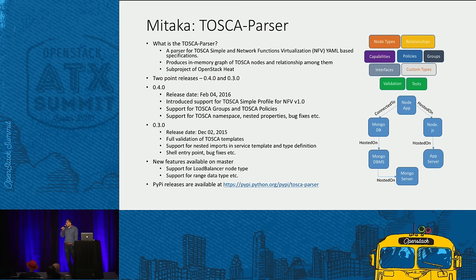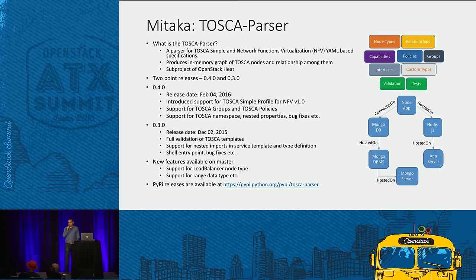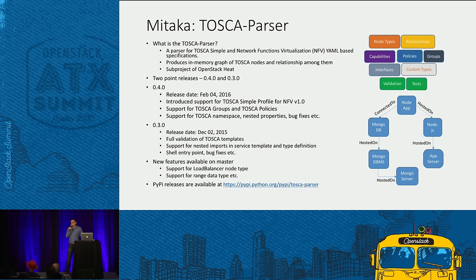There are two different TOSCA profiles: the TOSCA Simple Profile in YAML, and the NFV profile. The Simple Profile is focused on more general specification — topology and orchestration — whereas the NFV profile extends the Simple Profile for NFV-specific needs. The parser supports parsing both of those profiles.